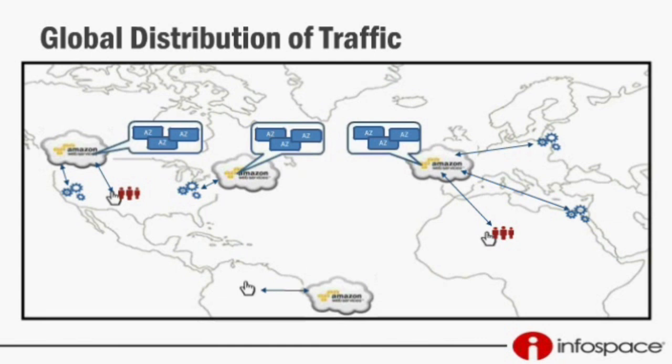We use Route 53 DNS Failover to provide high availability between regions — if one region goes offline, traffic is rerouted to the other regions. We used to do this in our data center using expensive network gear that automatically handled rerouting between data centers. Once we moved into AWS, before health checks were available for Route 53, we did this manually: we would get an alarm, change some DNS records, and point traffic to the healthy regions. Now with automatic health checks, there's no manual intervention — it's all automatic and handled for us.